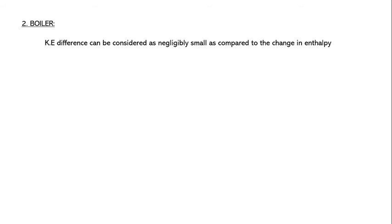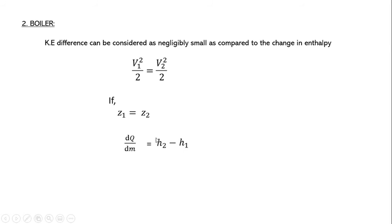For a boiler, which is a heat-interacting device, we assume no external work is done and the kinetic energy difference is negligibly small compared to the change in enthalpy. If z₁ = z₂, the SFEE for a boiler reduces to dQ/dm = h₂ − h₁, where h₂ is the specific enthalpy at the final point and h₁ is the specific enthalpy at the initial point.